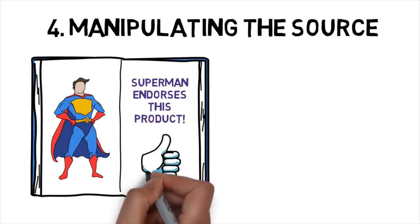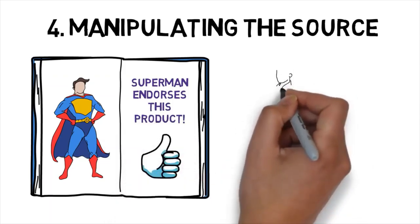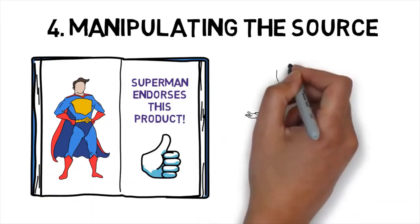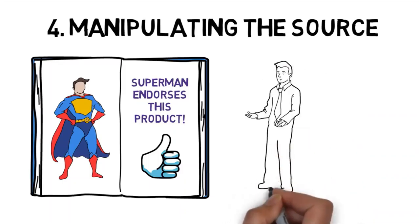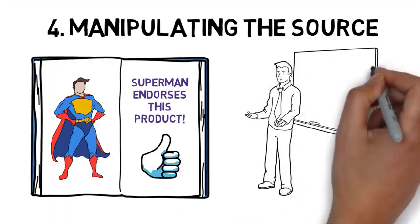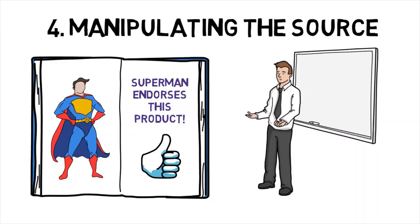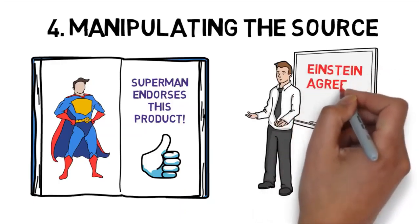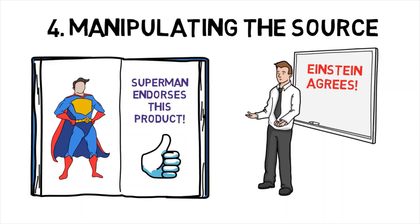If the inherent logic of your argument isn't doing the trick, try making an argument about the source of the information. So if you want to prove something to be true, look up someone famous or well-regarded who supports your side, and if you want to prove something to be false, do your best to undermine the source of their argument. This will go a long way in the complex and intricate game of persuasion.